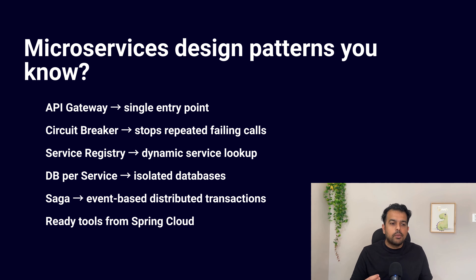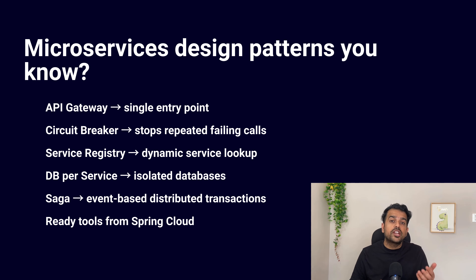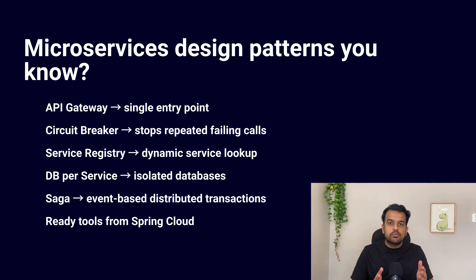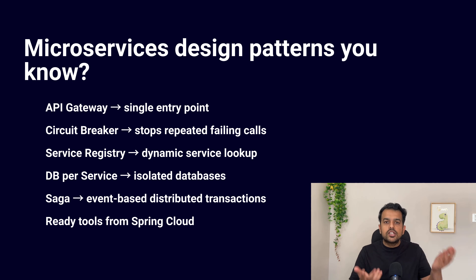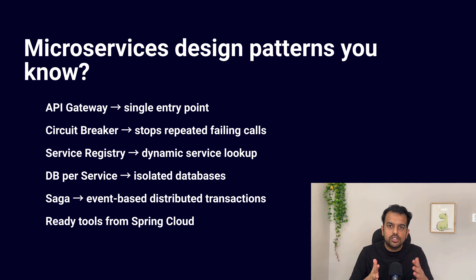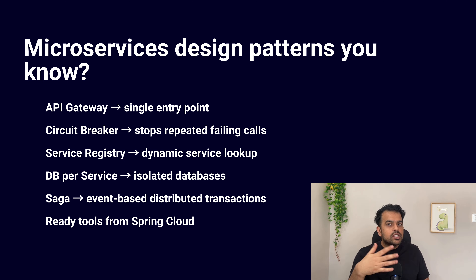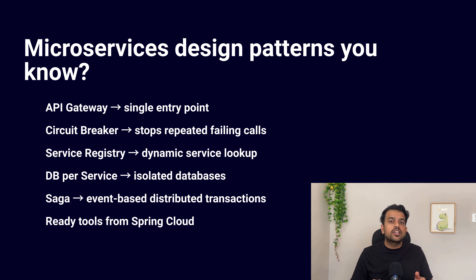The fourth pattern is Database per Microservice. Each microservice has its own database, which keeps services loosely coupled because no other service directly touches its tables. Each service can also choose the database type it needs — for example, one service might use MySQL while another uses MongoDB — and each microservice can change its schema without impacting others. The fifth and very important pattern is the Saga pattern, used for distributed transactions across multiple microservices. Instead of one big transaction, we have a sequence of local transactions in different services connected by events. If one step fails, we use compensating transactions to roll back what previous services did and keep data consistent.